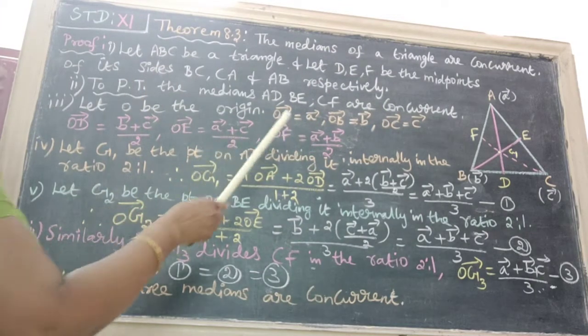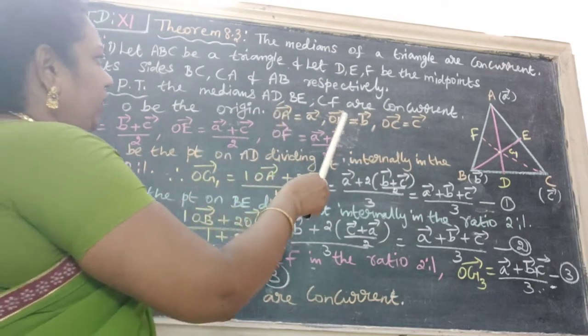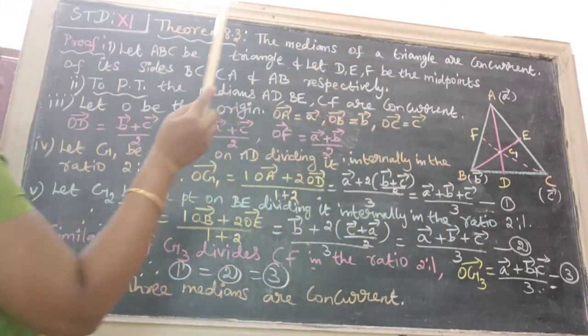Let O be the origin. Therefore, OA vector equals A vector, OB vector equals B vector, OC vector equals C vector.